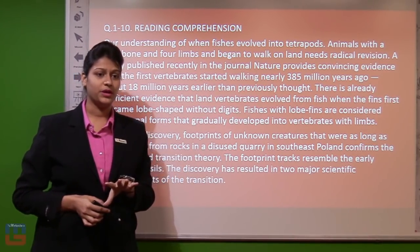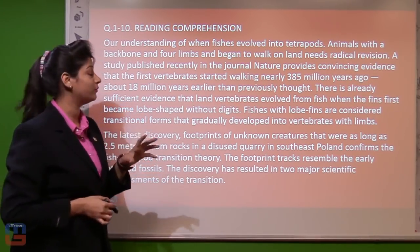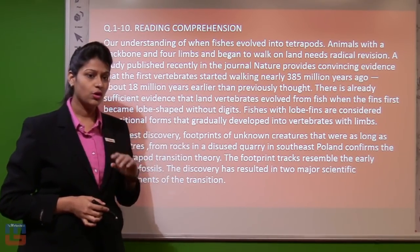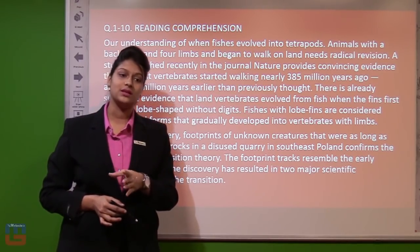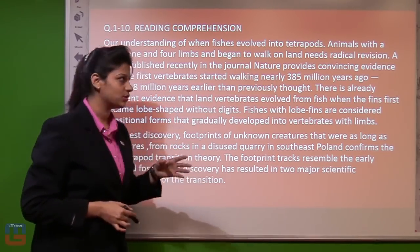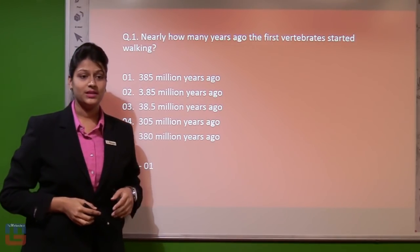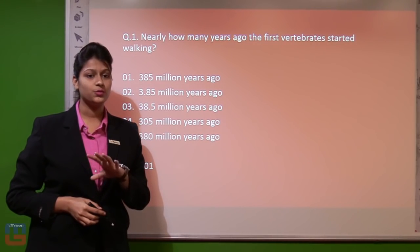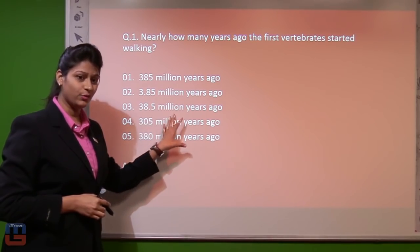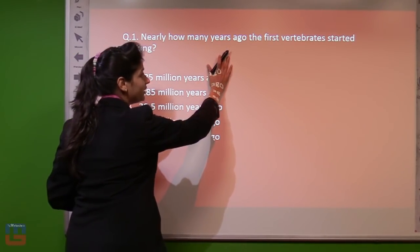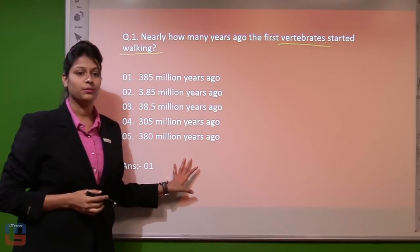If you have read this particular comprehension before, you must be knowing what is given — it is regarding the evolution of fishes. We are going to follow the same procedure: we will go to the questions first, mark the key points, then come back to the passage. The first question asks: nearly how many years ago did the first vertebrates start walking? The keyword here is vertebrates started walking.